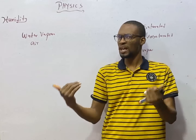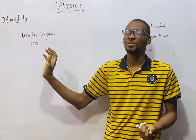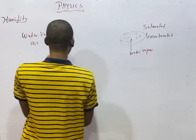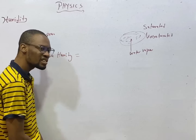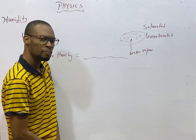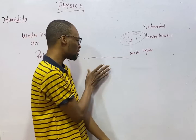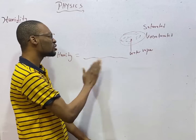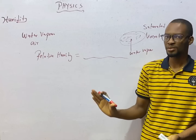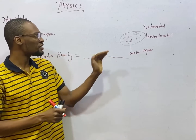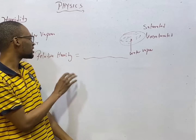When you hear 'relative,' it means we are comparing or relating two things. While humidity is the amount of water vapor present in air, relative humidity is simply the amount of water vapor that is present in air over the total amount the air needs to be saturated. If the water vapor present in air is compared with the maximum that the air needs, we say that is relative humidity.